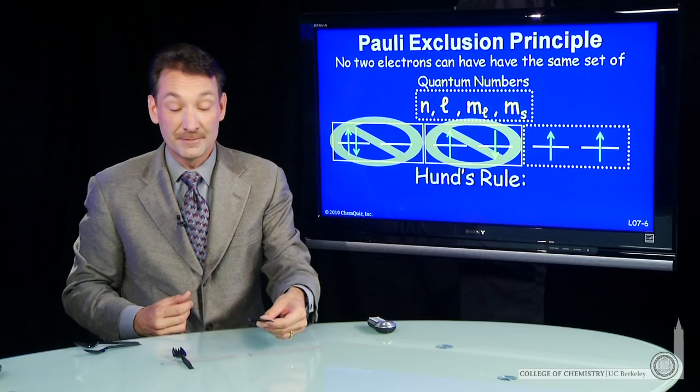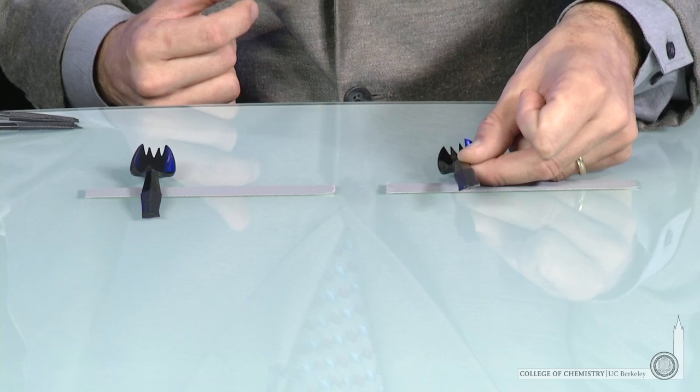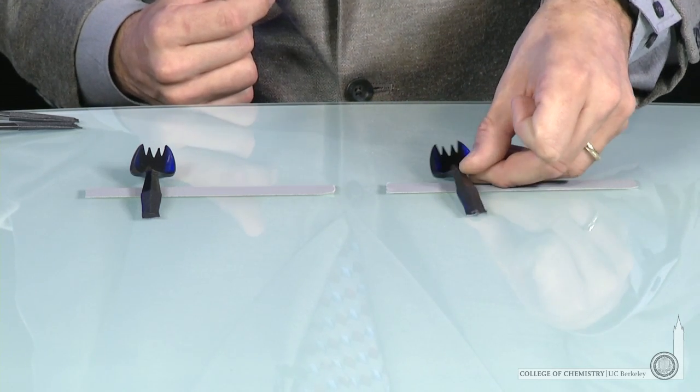Now, the second electron comes in. He says, no, I don't want to sit there. I want to sit here, far away, and spin parallel to the first spin.